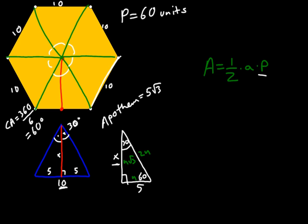So now we have enough information, we can solve for the area of our regular hexagon. Area is 1 half times apothem times perimeter. And remember, because multiplication is commutative, that's the same as saying 1 half times 5 times 60 times root 3.